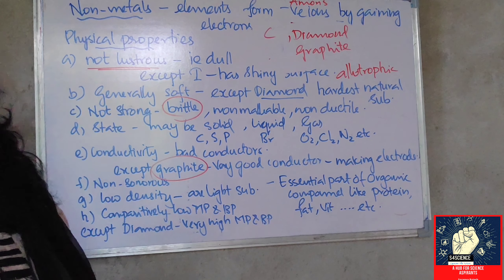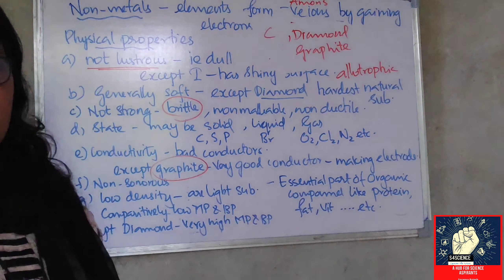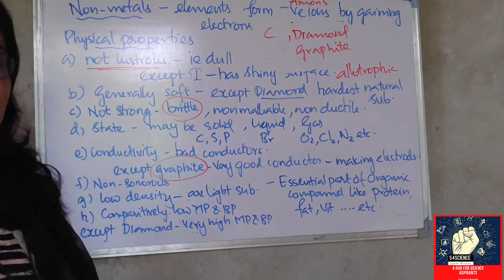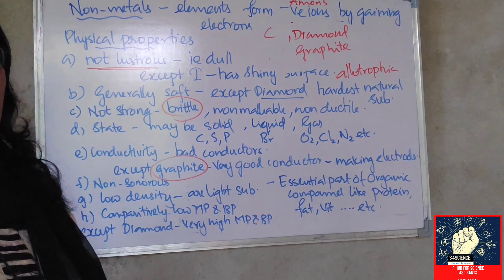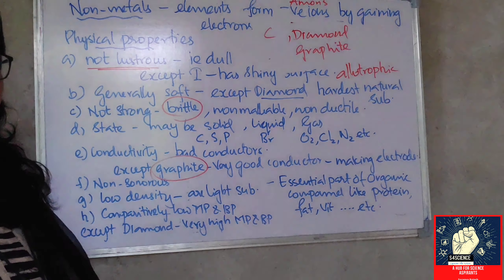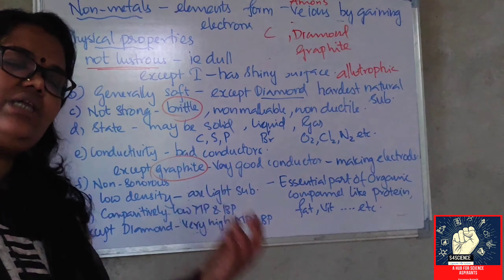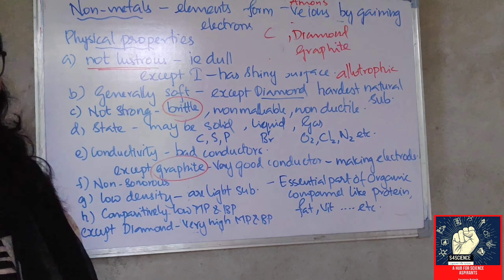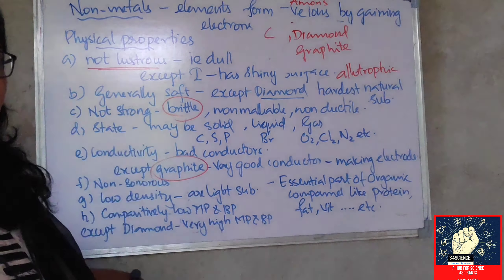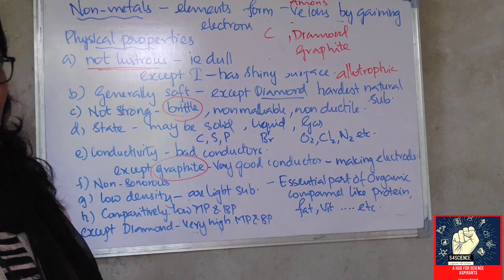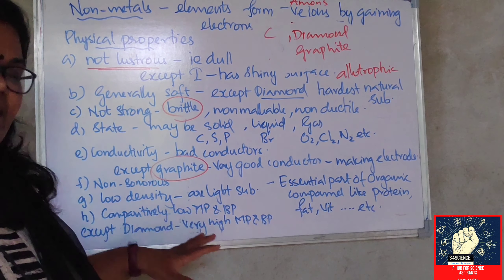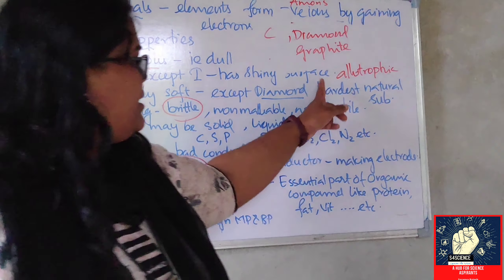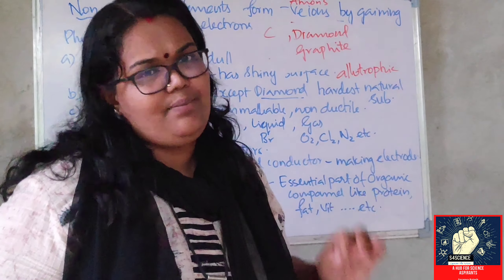What about sonority? Nonmetals are not at all sonorous — when beaten with another substance they do not produce sound. What about density? Nonmetals have very low density; they are light substances. And compared to metals, nonmetals have a very low melting and boiling point — but again there is an exception, which is diamond, which has a very high melting and boiling point.